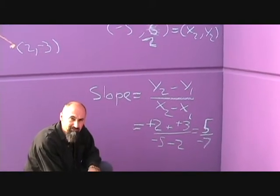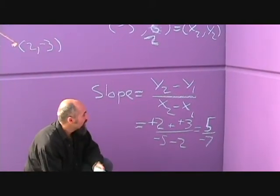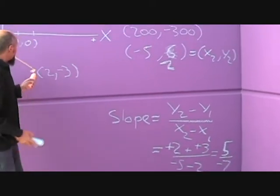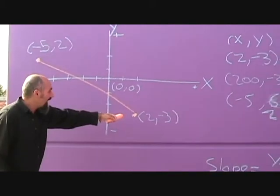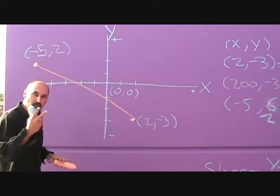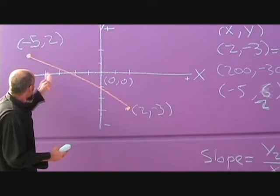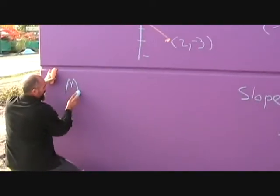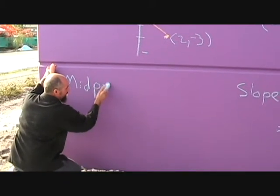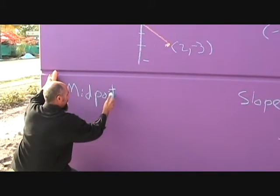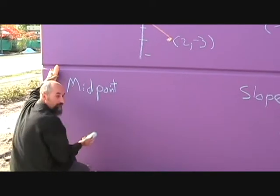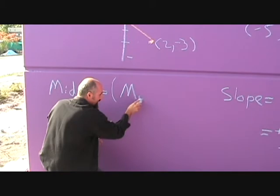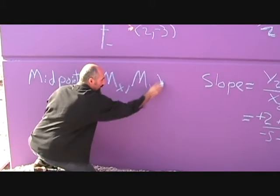The next thing you start dealing with is the midpoint of a line. If you have two points here and you want to divide this line into two equal parts, you want to find the middle. The midpoint is the midpoint of the x's and the midpoint of the y's.